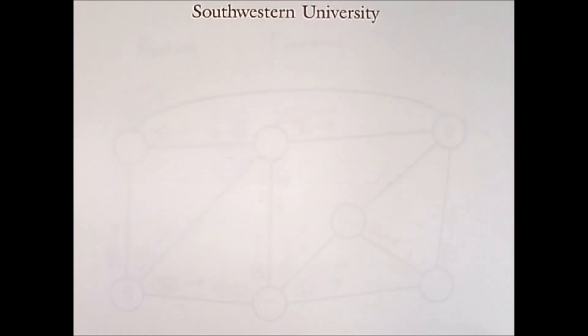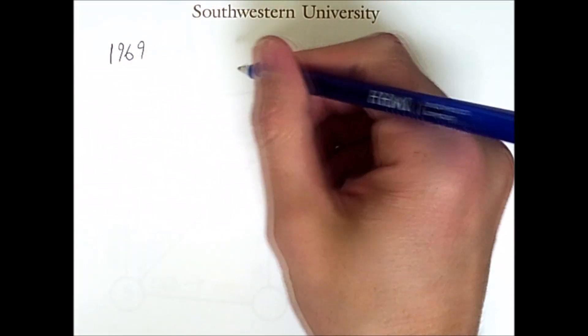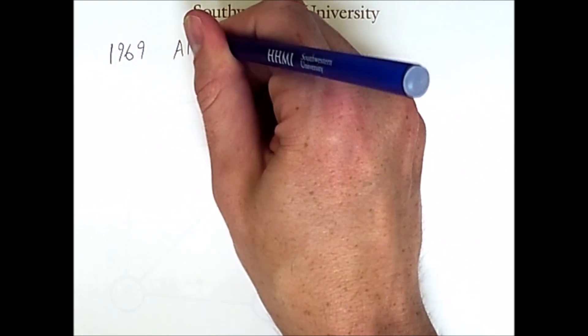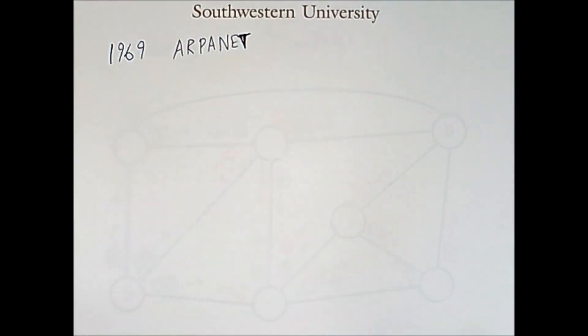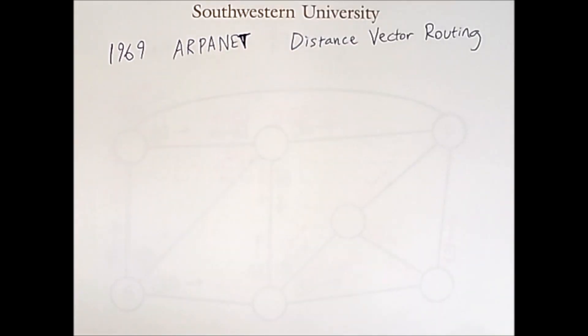You may not realize that the foundation of our modern internet was developed in 1969 as part of a system called ARPANET. ARPANET was developed by the Department of Defense in order to send transmissions over networks, and the way that it accomplished this was via distance vector routing. Distance vector routing is a simple means of sending packets through a network that only requires a little bit of information about the neighboring nodes of the network.